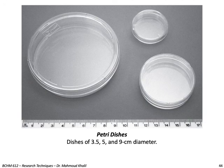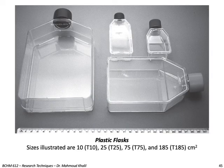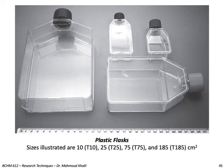Here you can see petri dishes in three sizes: 3.5, 5, and 9 cm diameter. Here you can see plastic flasks in four sizes: T10, T25, T75, and T185 cm squared. These numbers represent the surface area available for cell growth.